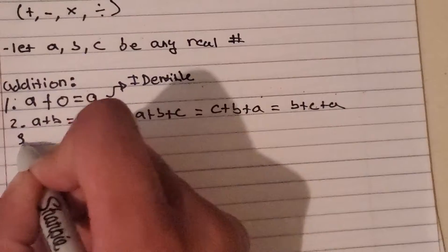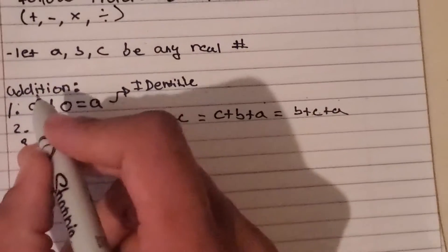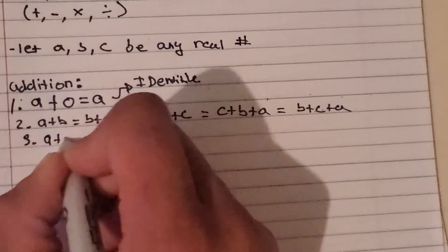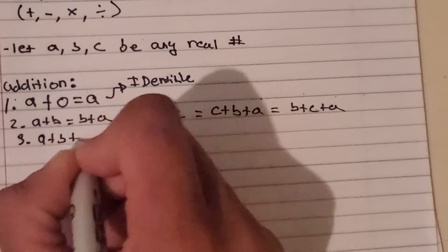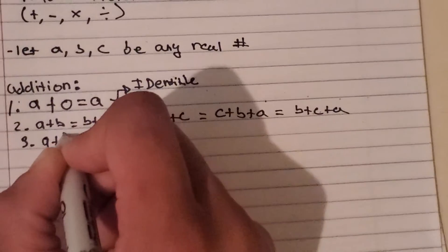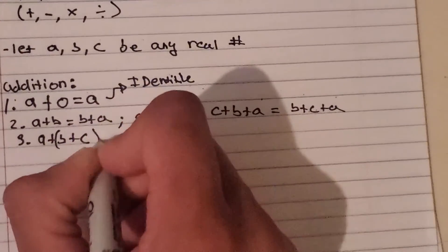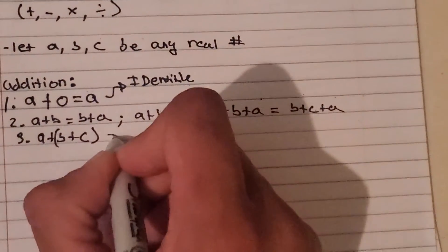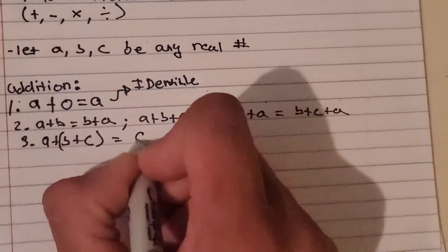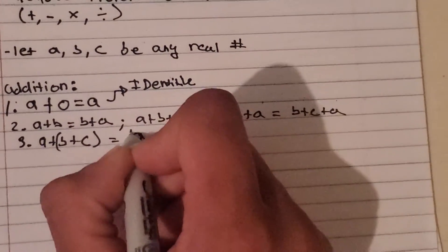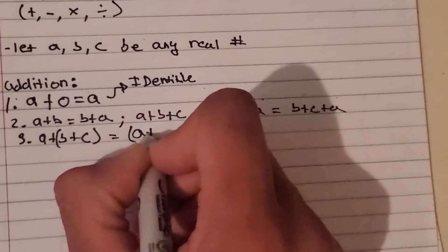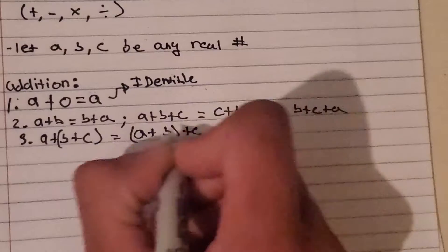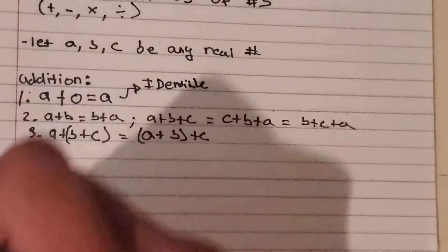Now if we have grouping symbols, we could group our numbers if we want. So A plus B plus C, where B and C are grouped together, would be the same as if we grouped A plus B and left C outside.